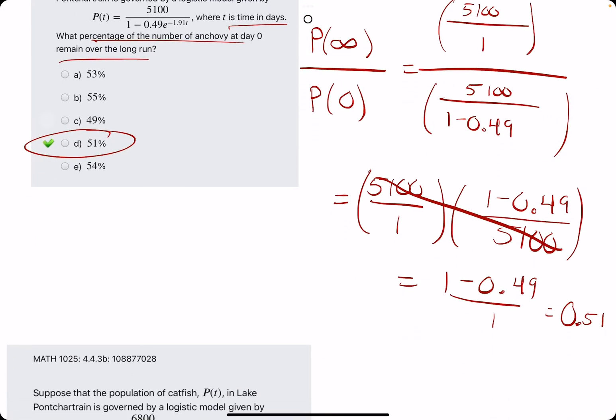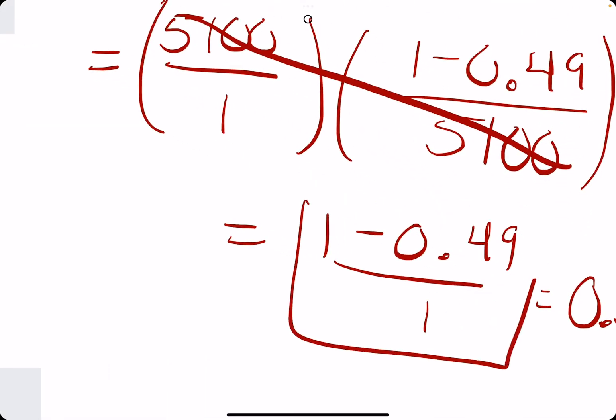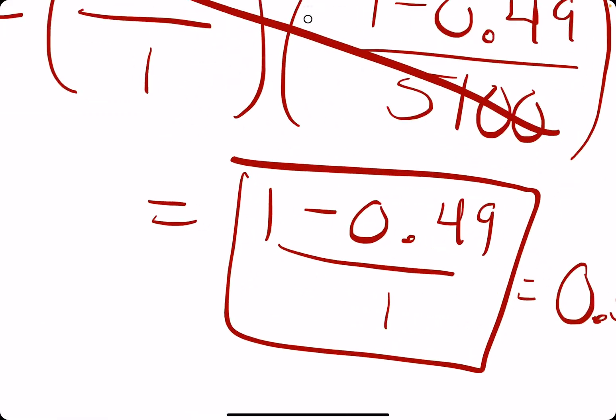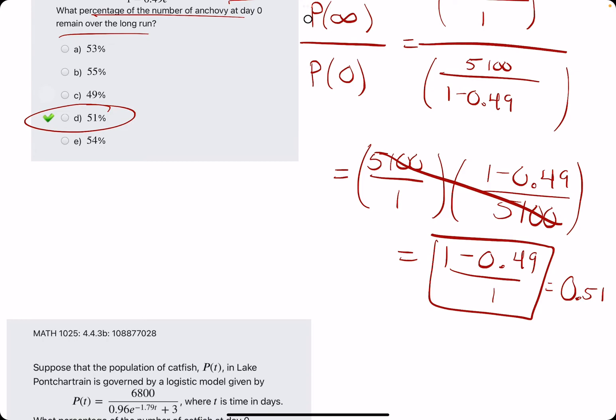And, that's basically it. That's the long version. Let's talk shortcuts. So, ultimately, where did our answer come from? Once we simplified everything, it came from just 1 minus 0.49 divided by 1.